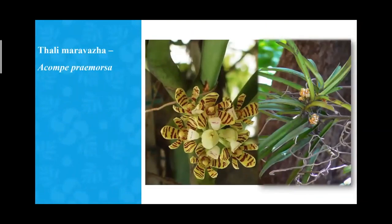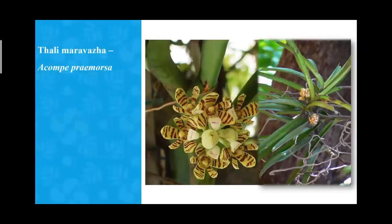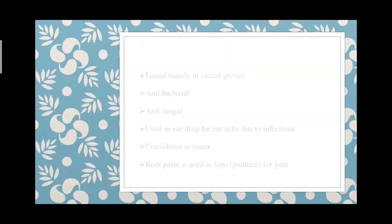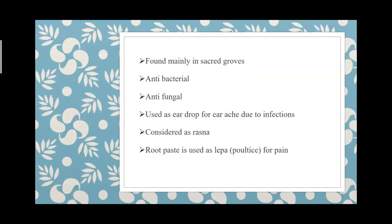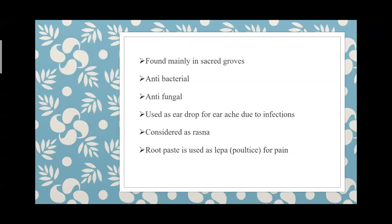The first flora is Tali marawara, which is Compa primosara — a tree orchid mainly seen in saccharides. It is considered a source of Rasna by some authors, though there is discussion about this. Many suggest it is indeed a source of Rasna.